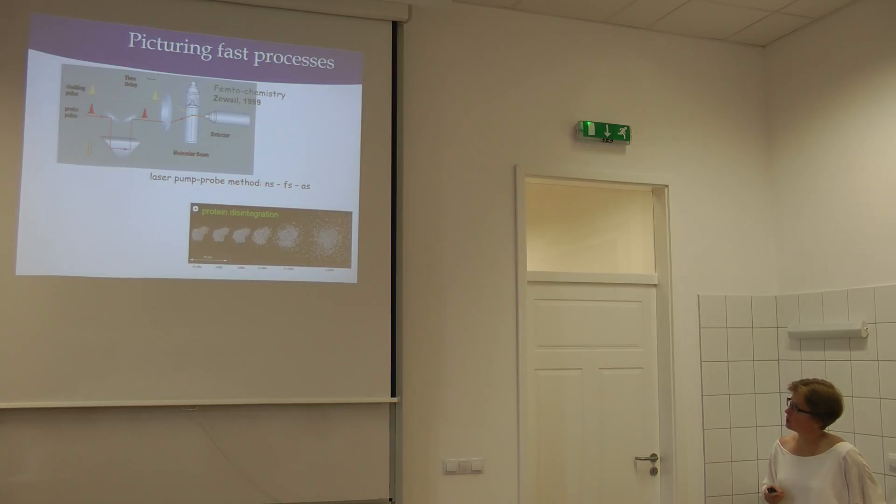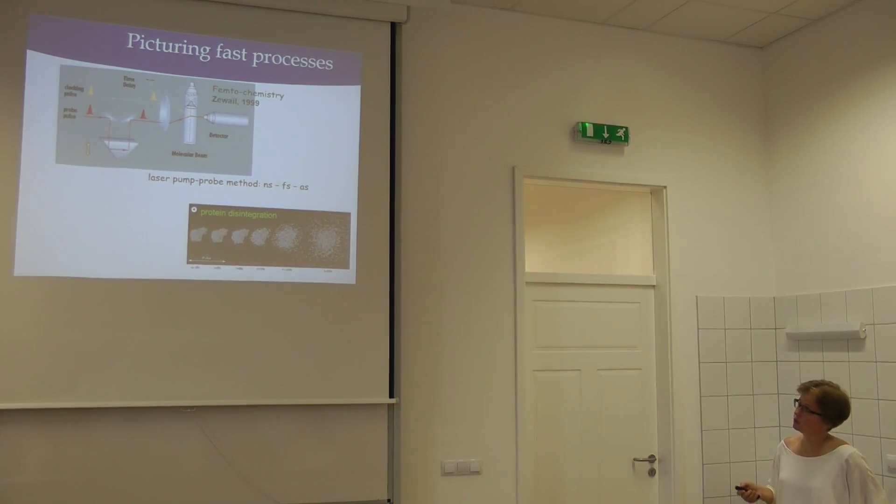And the way how we can study really fast processes, processes appearing on the femtosecond regime, is that we have a pump-probe setup. We have actually two laser pulses that are delayed relative to each other. And the delay between the two is very easily and reproducibly varied. And what happens is we have the pump or clocking pulse that we send into the system and it initiates a process. And then we come with the second pulse at a given delay and see the optical properties of the system.